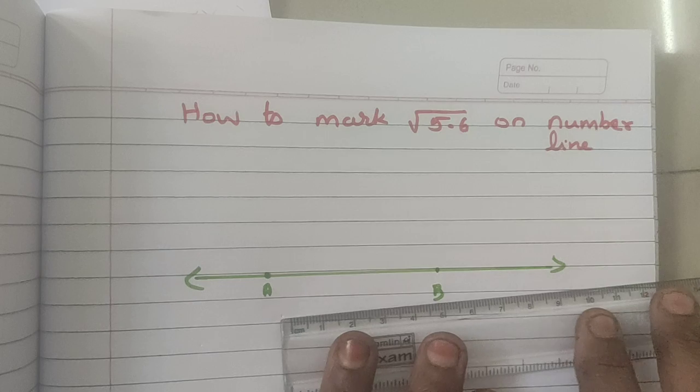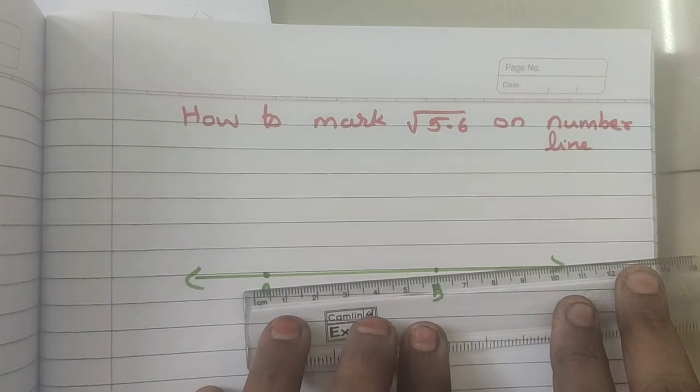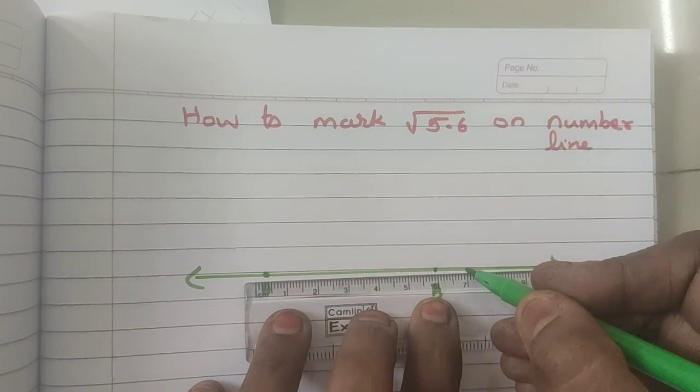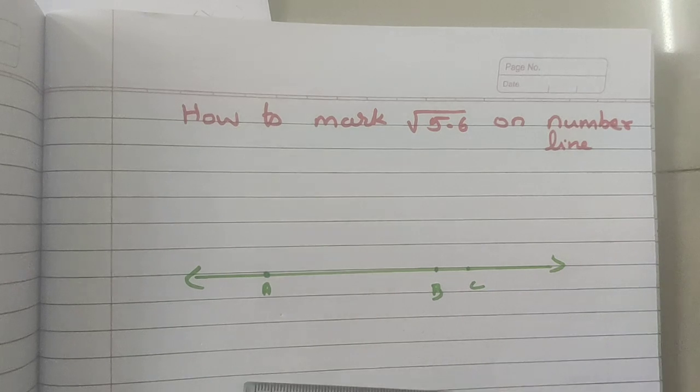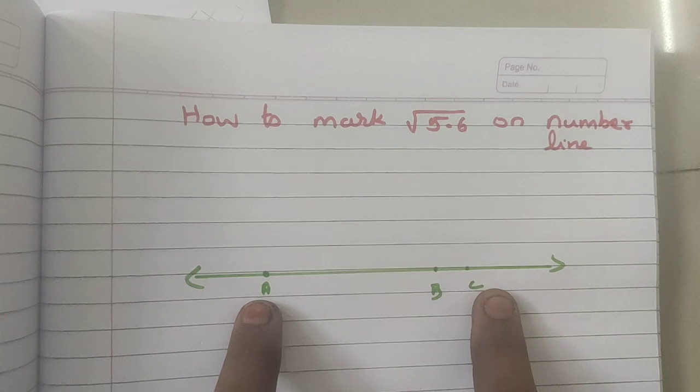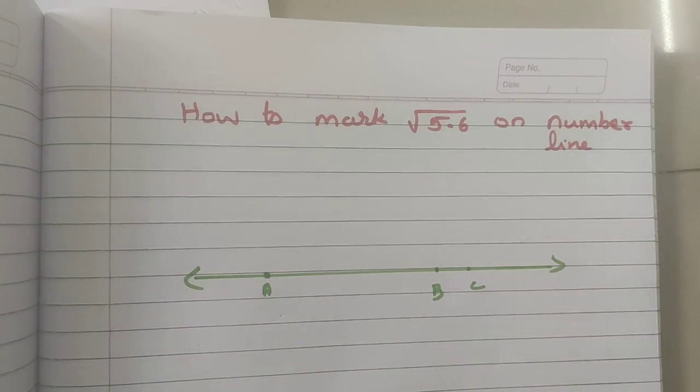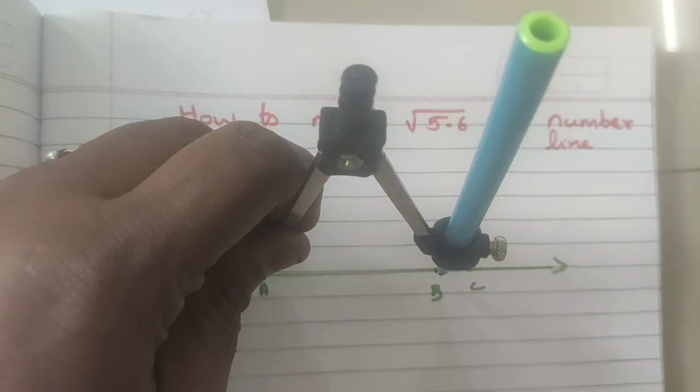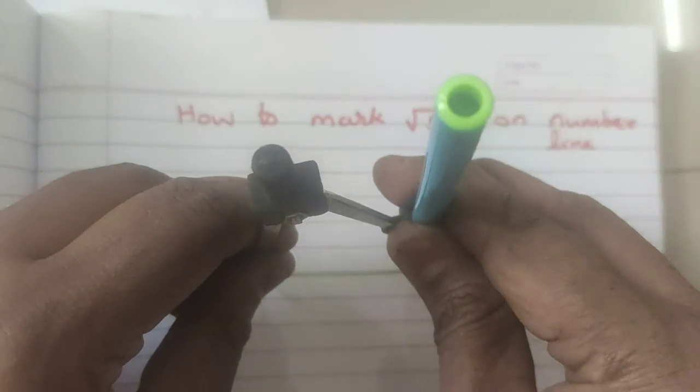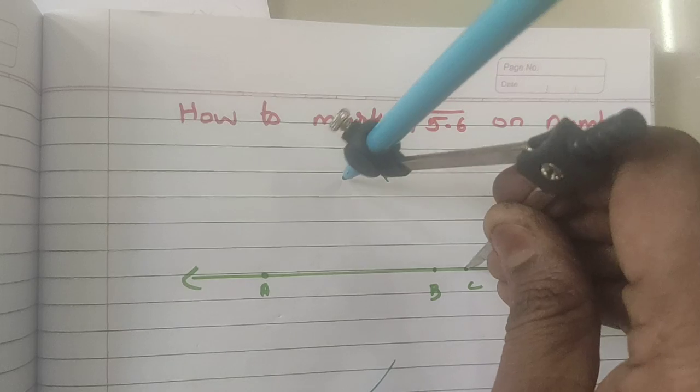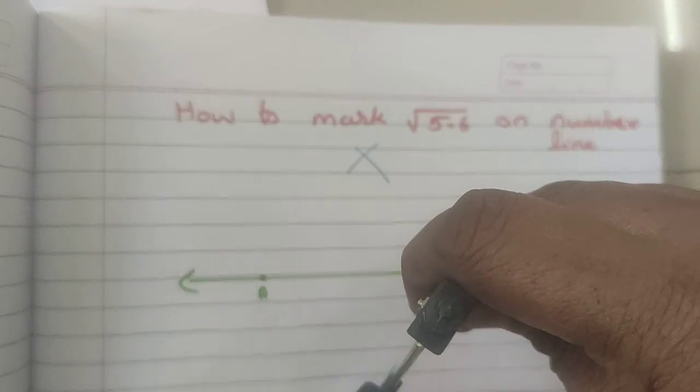Now, from B, measure 1 centimeter, mark it as C. Is it clear? Now, we are going to bisect A and C. So for bisect, what is the method we will do? Just bisect, take more than half of this measurement, take more than half, mark an arc on both the sides.